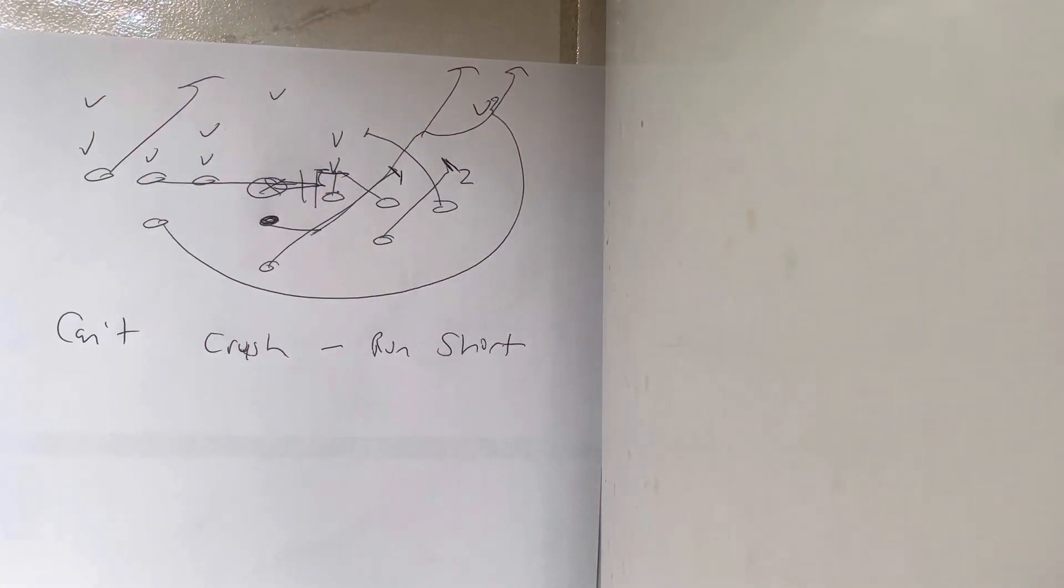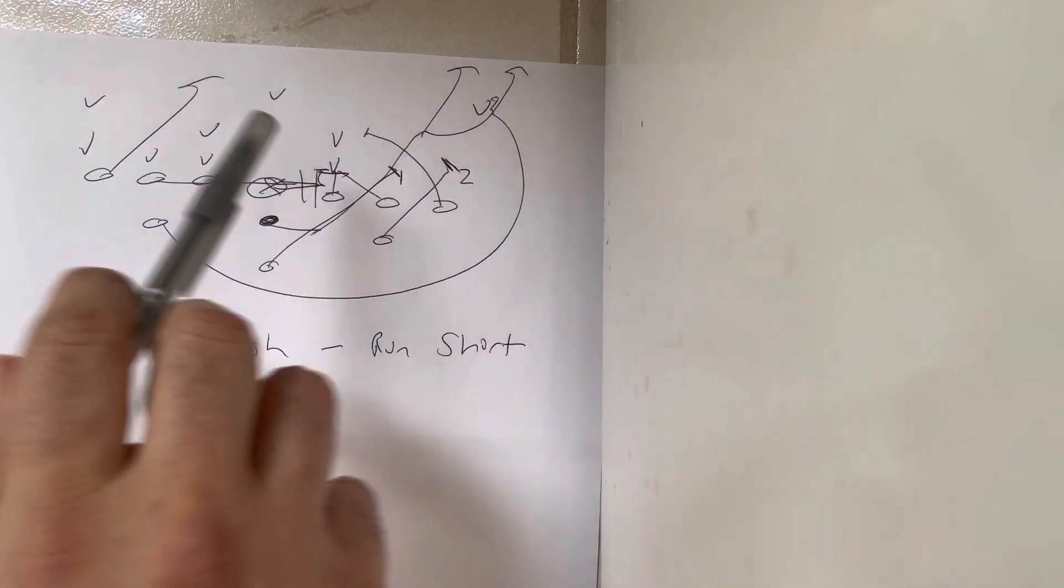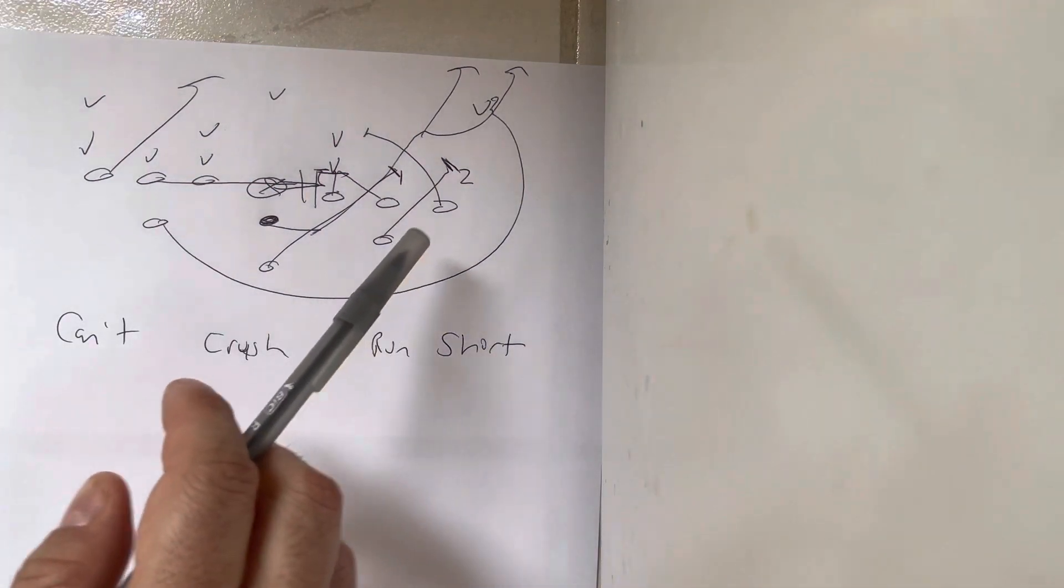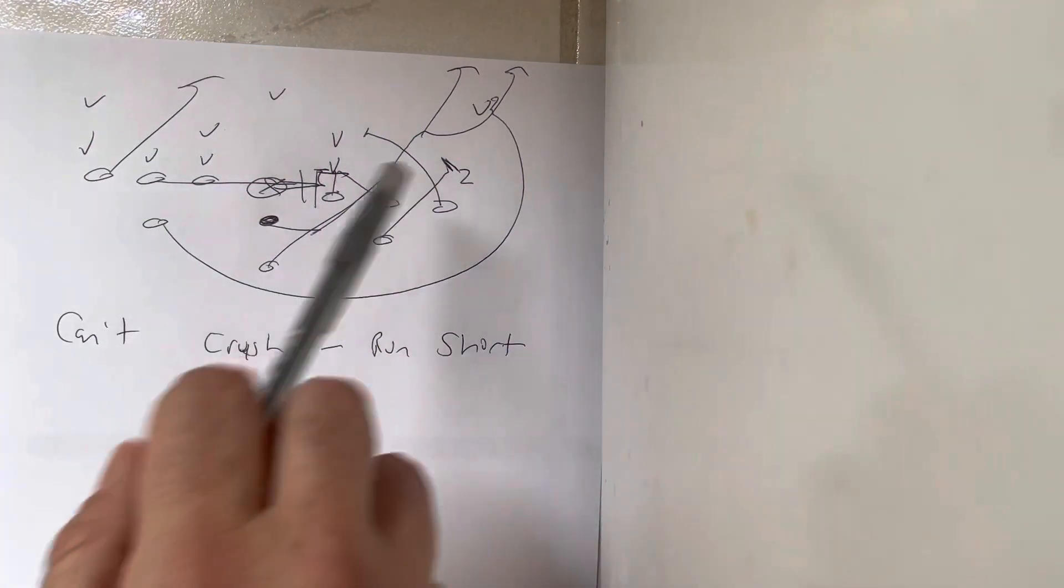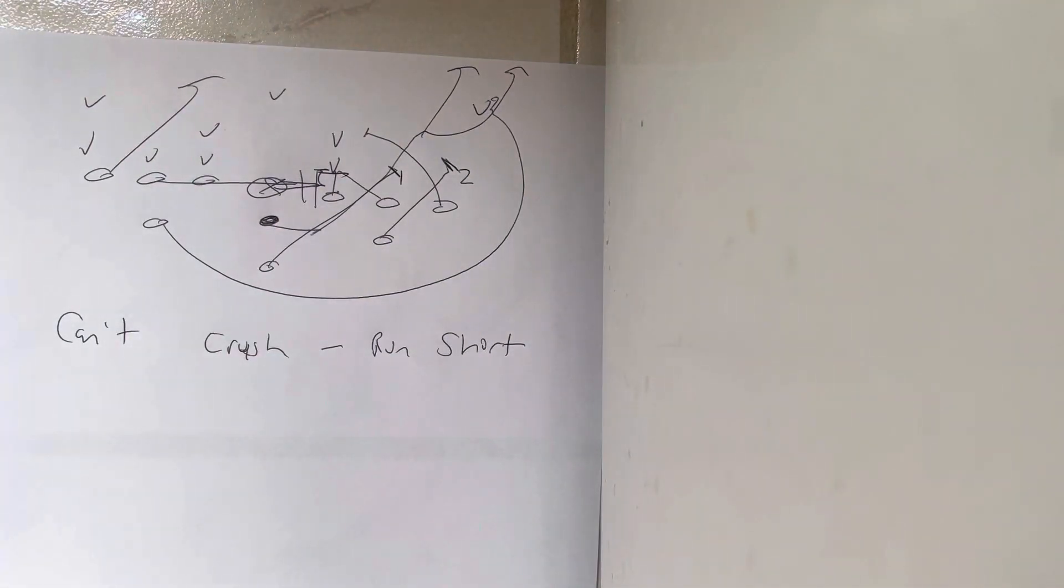So if you can't crush, run short. If the receiver can't block down at number one, if you can't block him out at the hole, block him in at the hole, it's short. Like I said, Army did this more so two years ago than last year. They did it a little bit last year. But really, this is done when you can't crush, run the short.